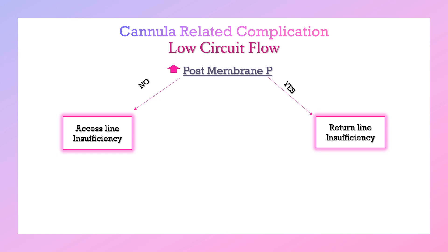The first part of cannula-related problems can be expressed as low circuit flow. As mentioned before, the centrifuge pump is preload dependent, so there will be changes in flow that can be read on the console. To monitor the flow, we use a flow meter. When we face low circuit flow, we should check post-membrane pressure, or P3. If there is no increase in P3, that means there is access line insufficiency or drainage cannula problem. If there is increased post-membrane pressure, that means there is return line insufficiency.